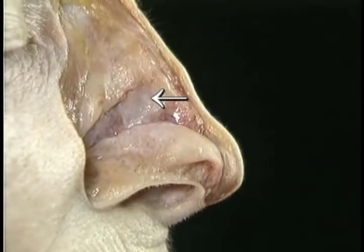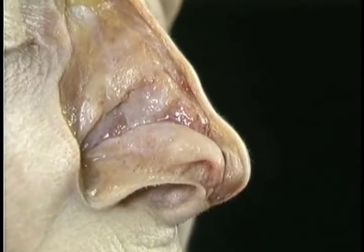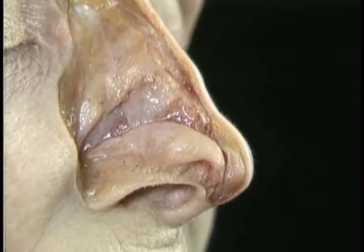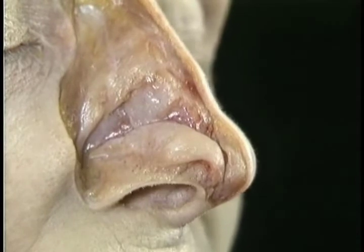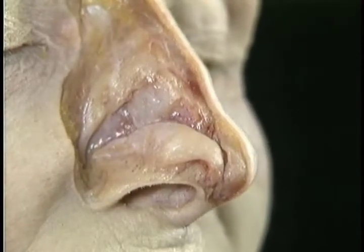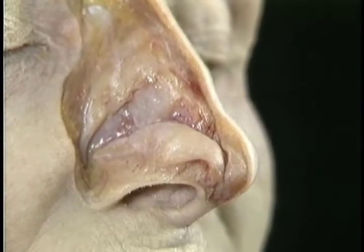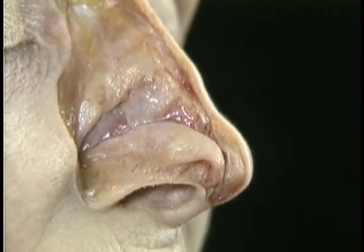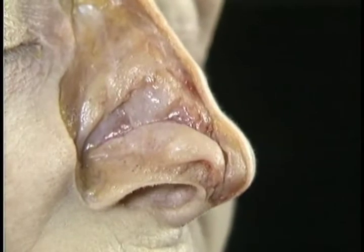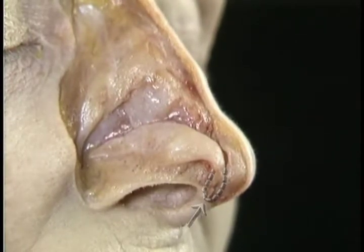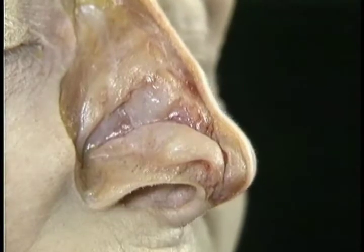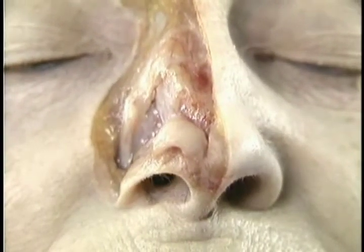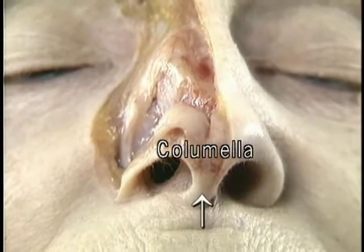The lateral cartilage is thin and flat and, in front, is continuous with the septal cartilage. The alar cartilage has two parts: the lateral crus and the medial crus. The lateral crus forms the curved outer framework of the nostril. The medial crus turns sharply backwards. Together, the two medial crura form the framework of the lowest, most anterior part of the nasal septum, called the columella.